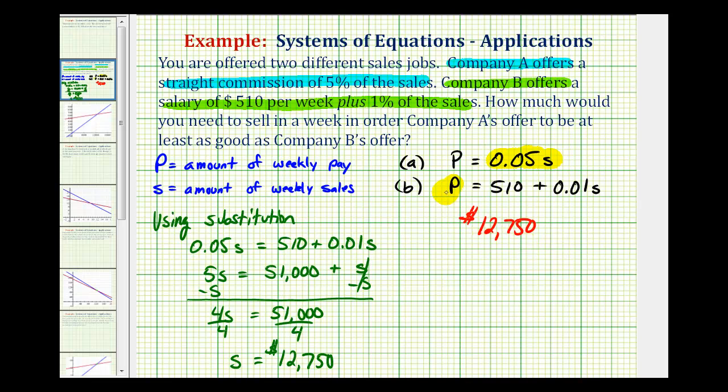Now it doesn't ask, but let's go ahead and figure out what that weekly pay amount would be. Remember, at this amount of sales, the weekly pay should be exactly the same. So for offer A, we have the weekly pay is equal to 0.05 times 12,750. Again, this is a straight commission. This comes out to $637.50. Again, this would be the weekly pay.